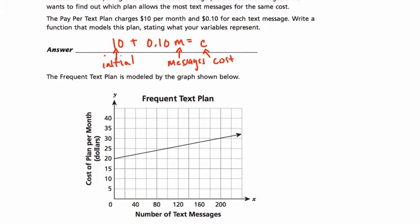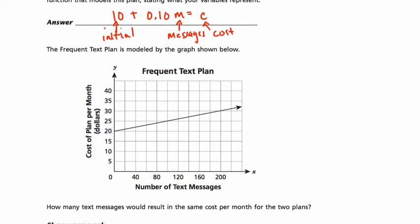The frequent text plan is modeled by the graph below. Let's take a look. This says we start at $20, so it starts at a higher rate. And if I go to this point, it looks like a friendly point, I see that it goes up $5, but how many text messages is that? Let's see, 40, 80. So here we're going up by 20. This is 60. This is 100. So for 100 text messages, it costs me $5.